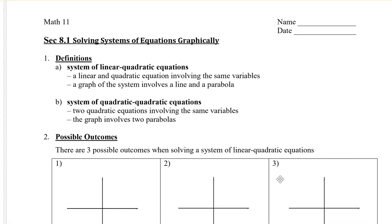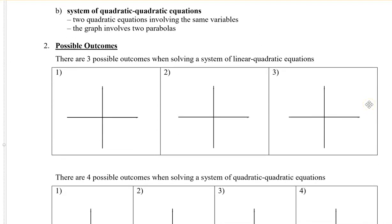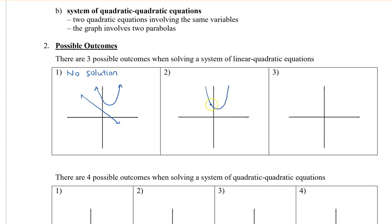There are three possible outcomes when solving a system of linear-quadratic equations. The first possibility is that you have a parabola and a line that don't intersect — in this case there is no solution. Another possibility is where they do intersect, but just touch at one point, giving one solution. The third possibility is where the line cuts the parabola two times, giving two solutions.